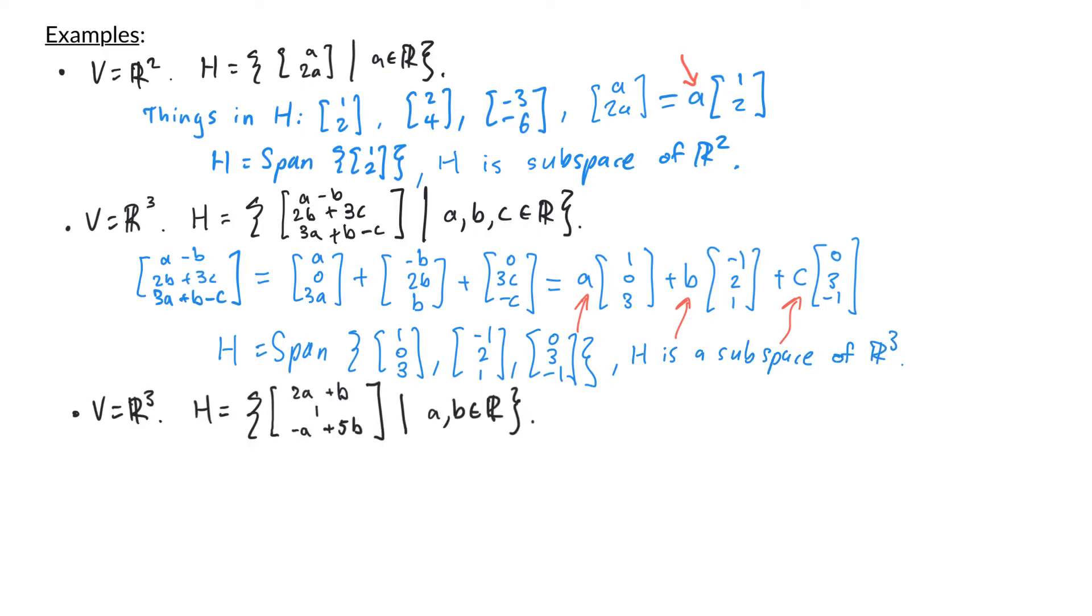Let's look at one last example. So here we're still in r3 and h here is the collection of vectors of the form 2a plus b, 1, negative a plus 5b where a and b are any real numbers. An arbitrary vector of h is going to have the form 2a plus b, 1, and negative a plus 5b. Again we can split this up into a vector that only contains a's so we have 2a, 0, and negative a. A vector that only has b's, b, 0, and 5b, and then we have a vector that doesn't have any variables at all, the vector 0, 1, 0. We can factor the a out of the first vector to get a times 2, 0, negative 1, factor the b out of the second vector to get b times 1, 0, 5, and then we're still left with 0, 1, 0.